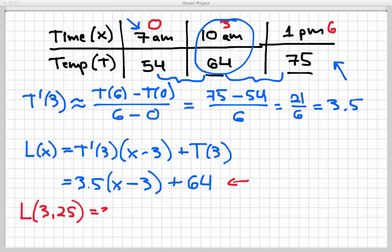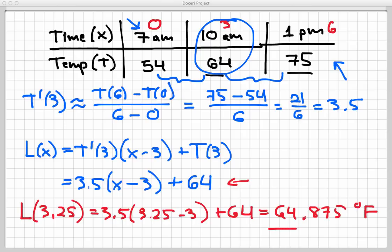So this is 3.5 times (3.25 - 3), all that plus 64. I'll let you crunch the numbers on this, and you will come up with 64.875. That's a decimal point there, and that's in degrees Fahrenheit. So that would be an estimate for the temperature value at 10:15 a.m.